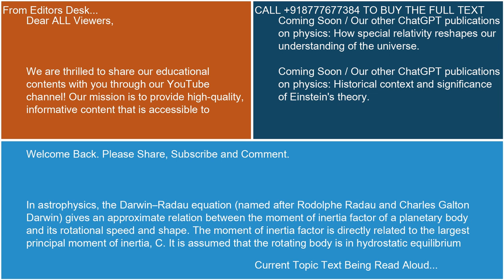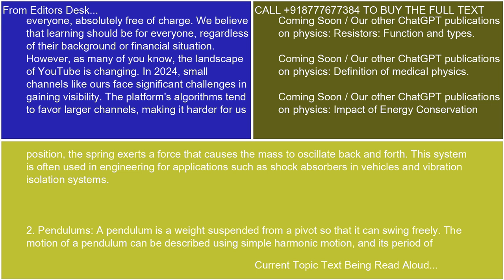Answer 1: Mass spring systems. A mass spring system consists of a mass attached to a spring, and it is used to study simple harmonic motion. When the mass is displaced from its equilibrium position, the spring exerts a force that causes the mass to oscillate back and forth. This system is often used in engineering for applications such as shock absorbers in vehicles and vibration isolation systems.